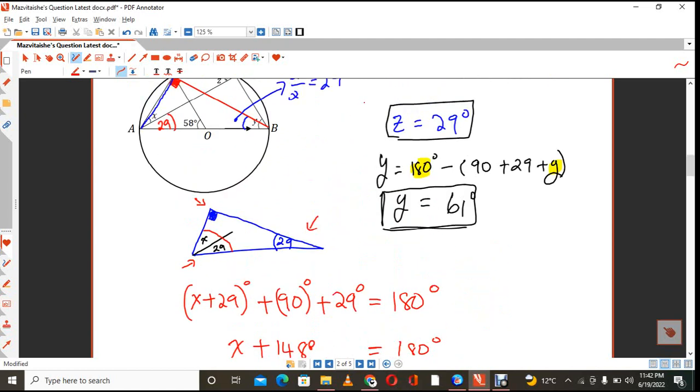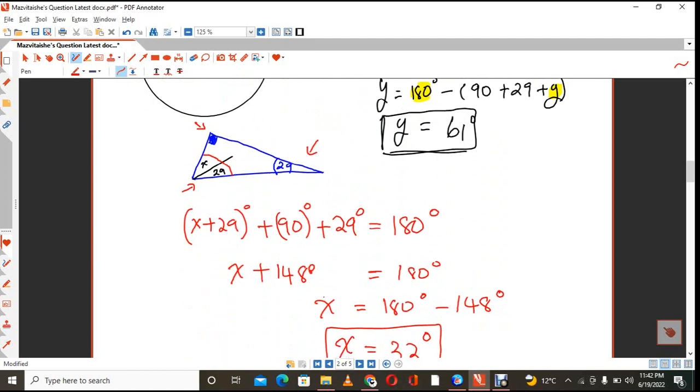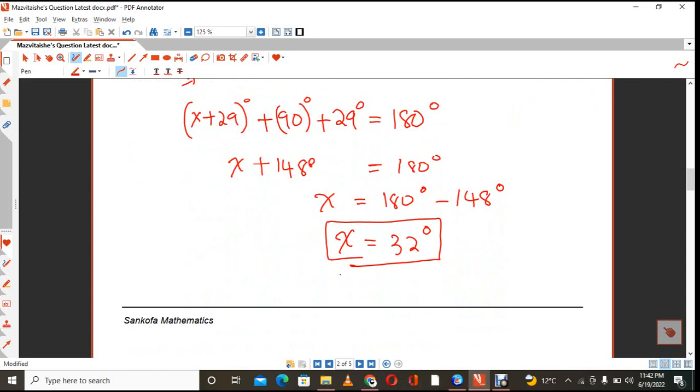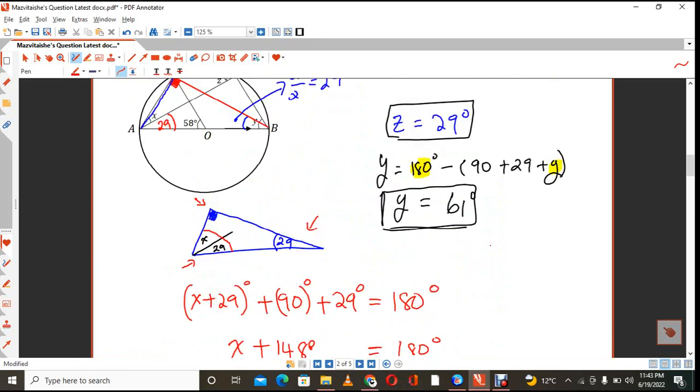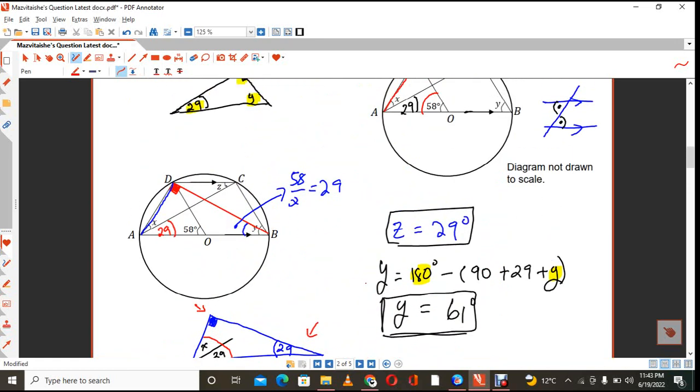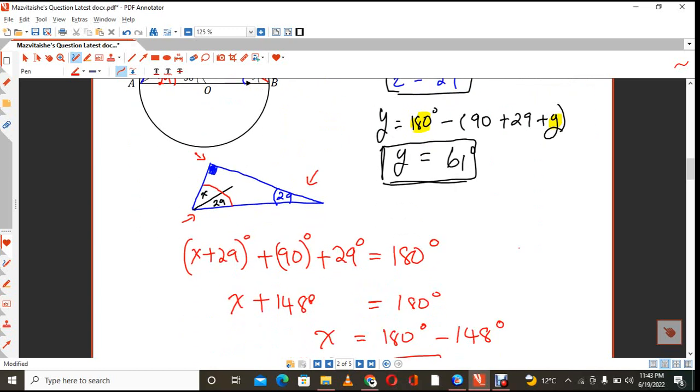So, my various solution for Z and Y, because you need to answer that, would be, if I do that here at the bottom, angle X equals to 32 degrees. Angle Y equals to 61 degrees. And, angle Z is equal to 29 degrees. We did this very much in the beginning.